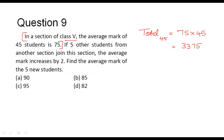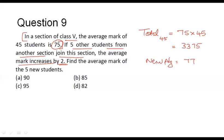Now it is given in the question that if 5 other students from another section join this section, the average marks increases by 2. The original average was 75, and if it increases by 2, the new average will become 75 plus 2, that is 77. Now let us assume the average marks of these 5 students to be equal to A.